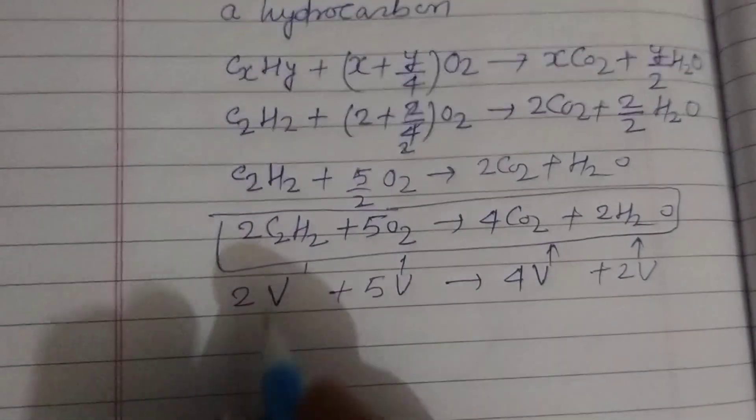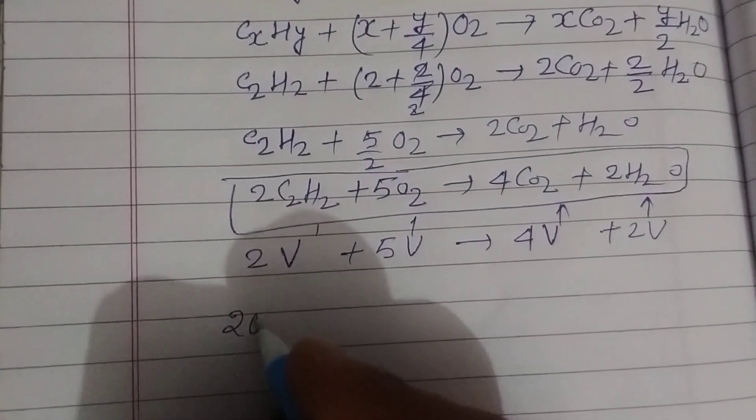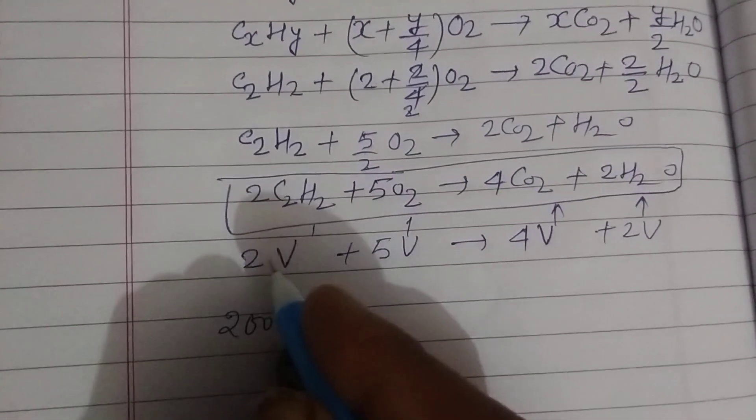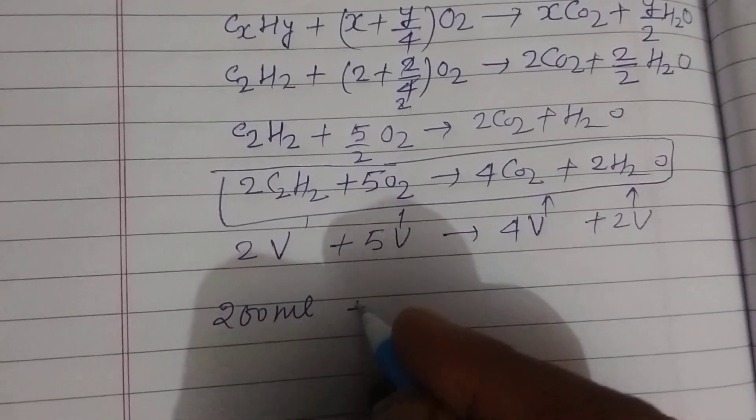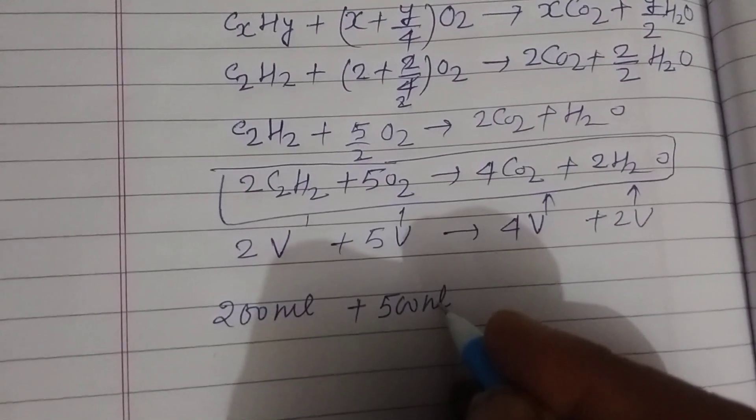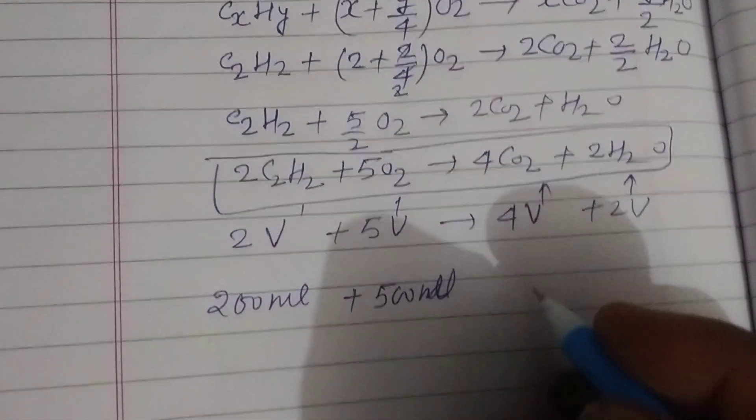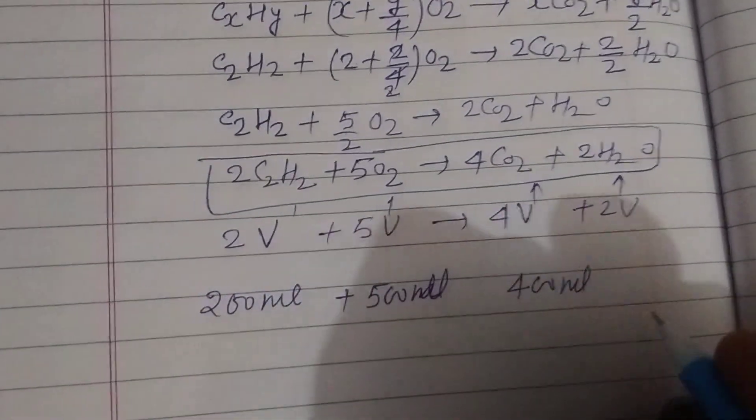So we want to make it 200 mL. So 200 mL: when we multiply by 100, we get 500 mL of oxygen and 400 mL of carbon dioxide.